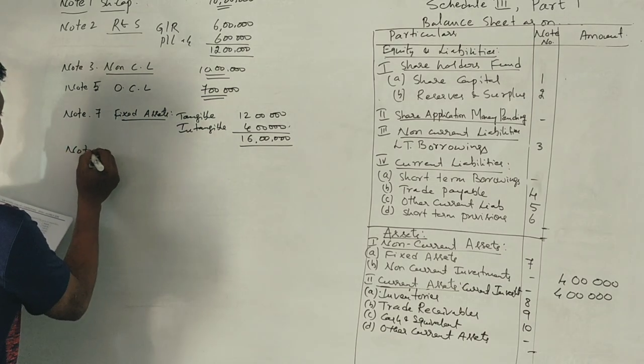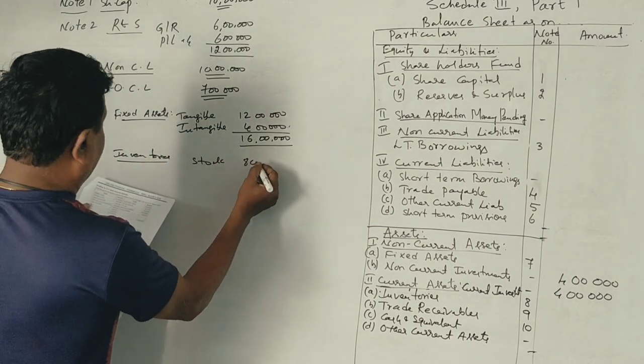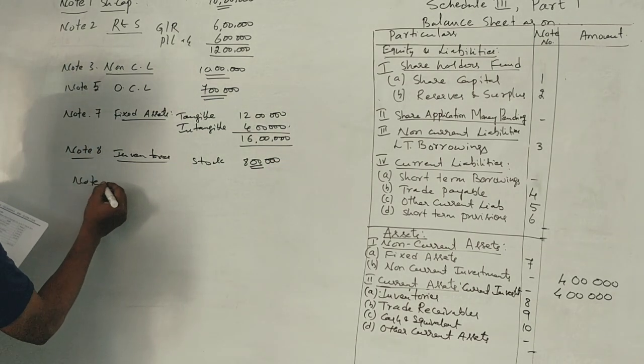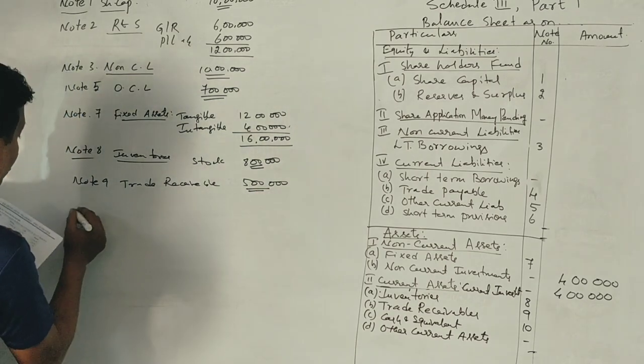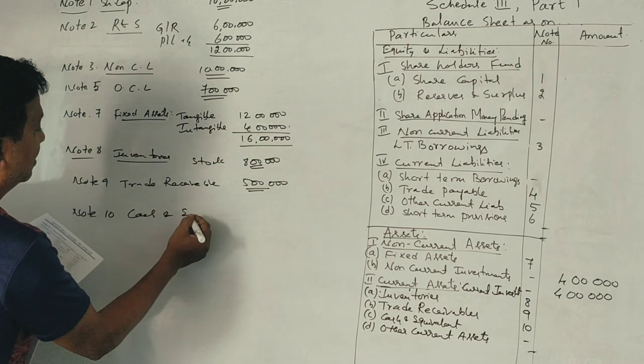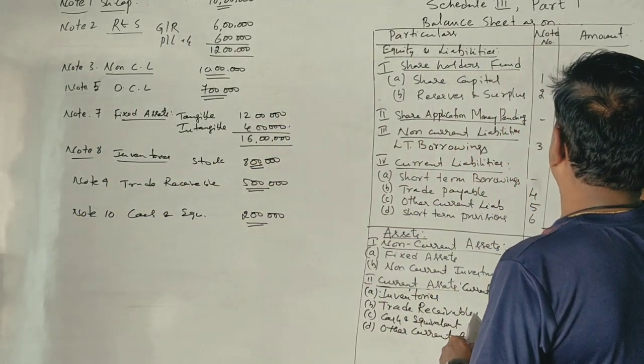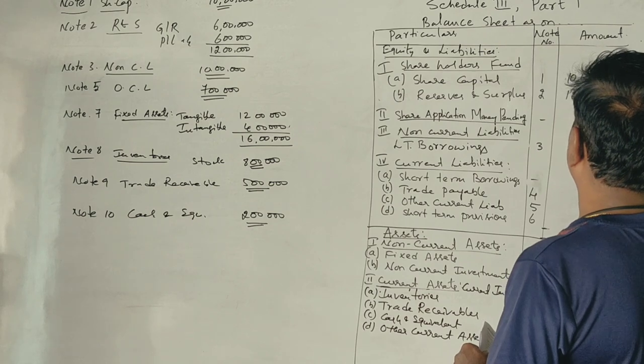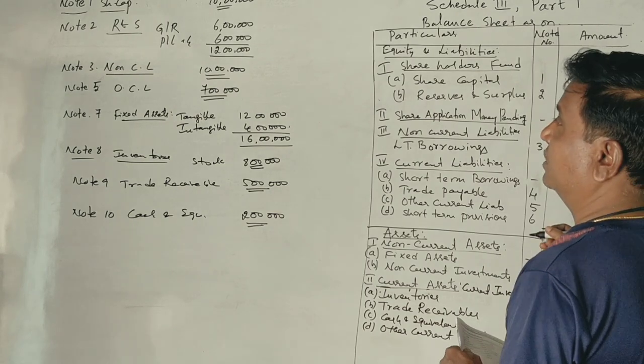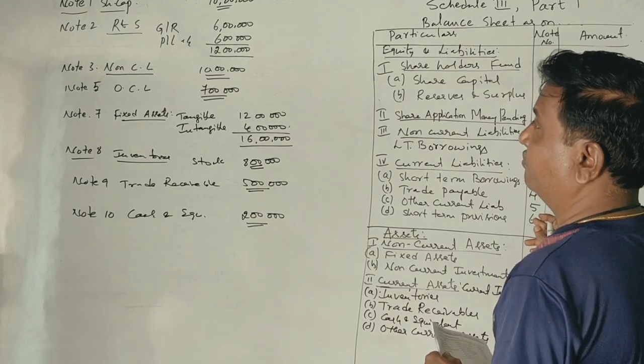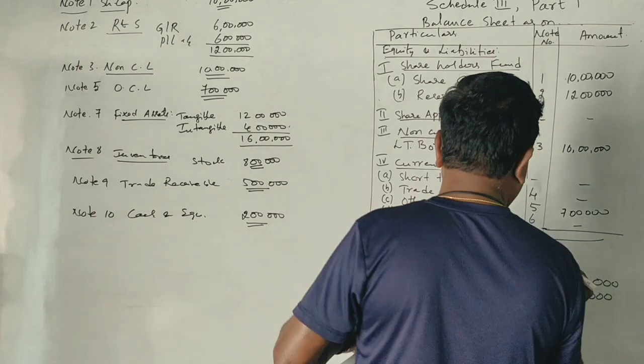Note number 8 - stock inventories. Stock is 80 lakhs. Note number 9 is trade receivables 5 lakhs. Note number 10 is cash 2 lakhs. Share capital 10 lakhs, 12 lakhs. Next, non-current liabilities 10 lakhs. Total 39 lakhs.